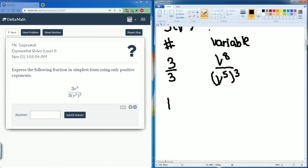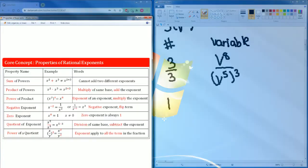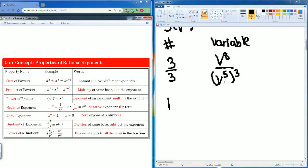We need to deal with this. You should remember that the bottom you have a power of an exponent so you're going to multiply the exponent. So v to the eighth is on top on bottom it is v5 going to be multiplied by the 3.